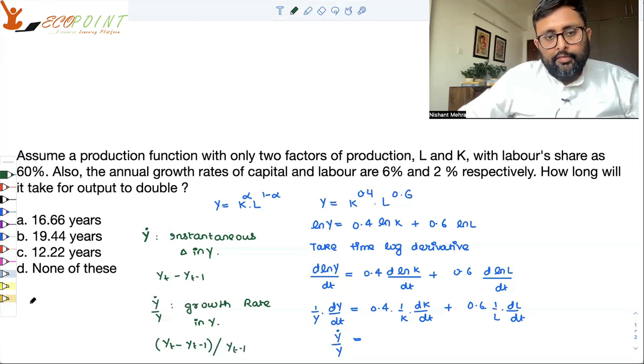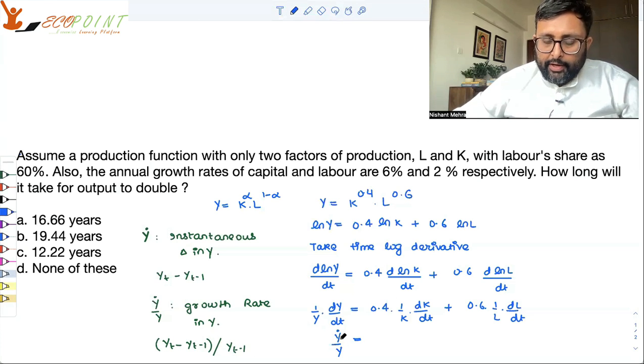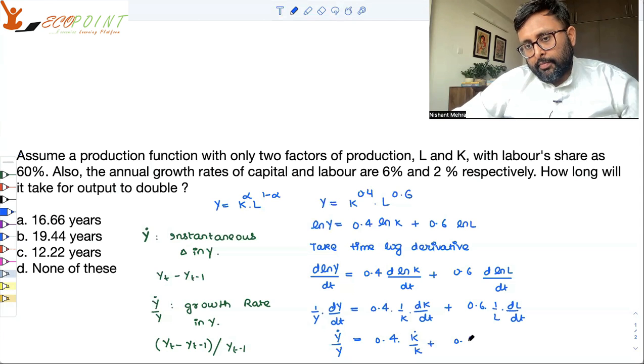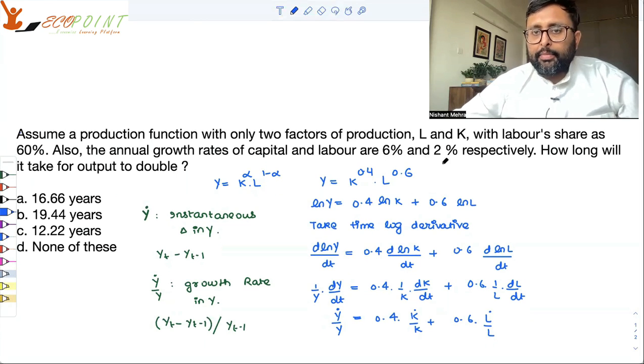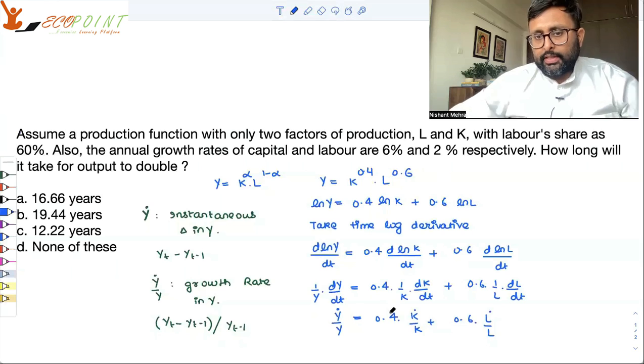Growth rate in Y divided by Y_(t-1). Like this. So, this is the growth rate in Y. Y dot by Y is growth rate in Y, which is equal to 0.4 K dot by K plus 0.6 L dot by L.